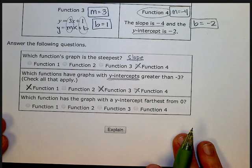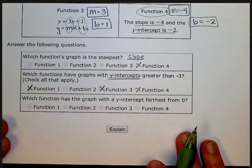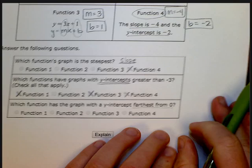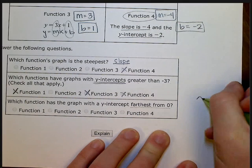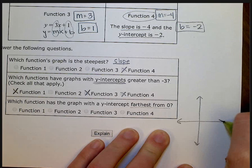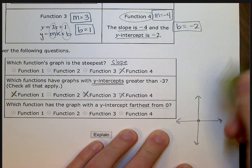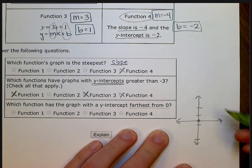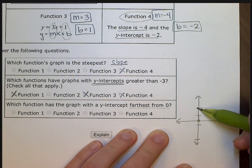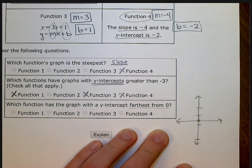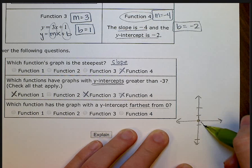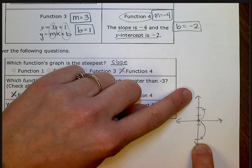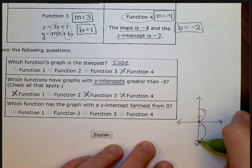Last but not least, it says which function has the graph with the y-intercept farthest from 0? When you think about a graph, here is the 0 point. So the farthest one, if we have one here, here, here, and here, the farthest one doesn't have to be positive. It's just the farthest from 0. So for example, this negative one is farther than this positive one. So we're just looking for the farthest distance from 0.